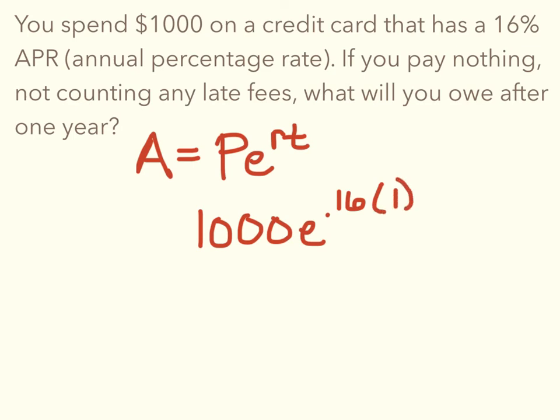E to the, the rate is 16%, so 0.16 times our time is one year. And we're just going to punch that in the calculator, and we'll see that after one year, we owe $1,173.51.